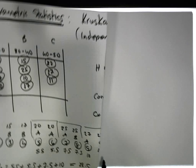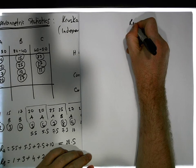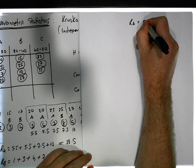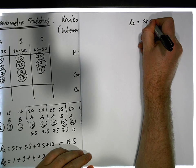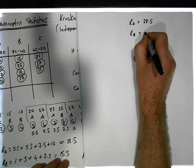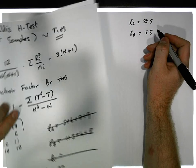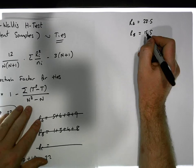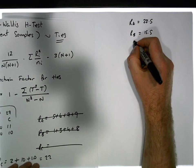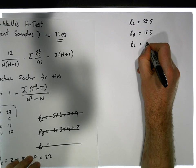Let's write down all our values. The ranks of group A equal 28.5, the ranks of group B equal 15.5, and the ranks of group C equal 22.